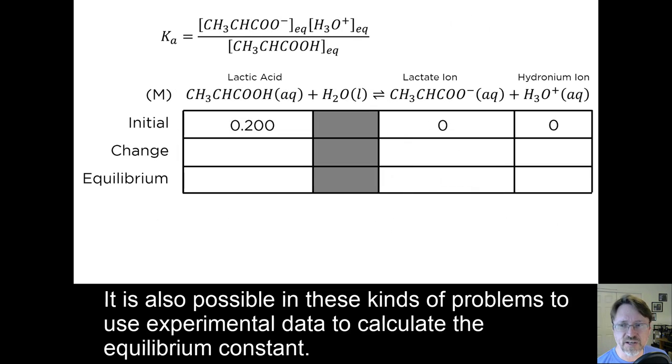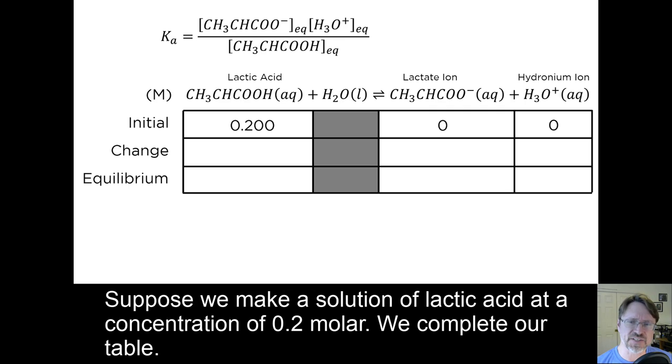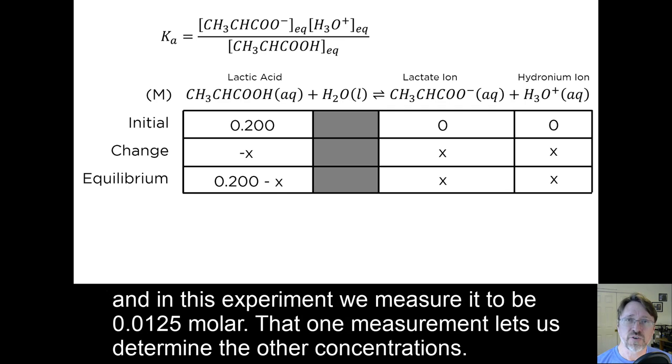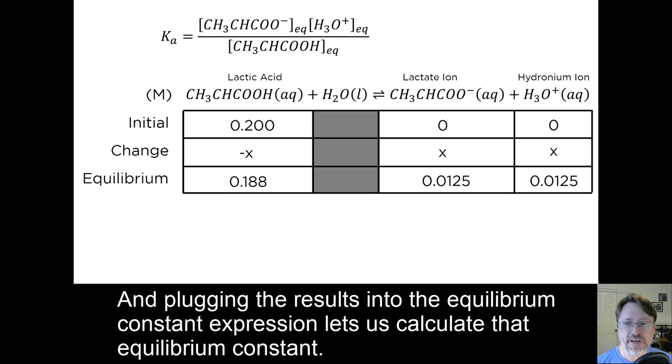It is also possible in these kinds of problems to use experimental data to calculate the equilibrium constant. Suppose we make a solution of lactic acid at a concentration of 0.2 molar. We complete our table. As we will learn in an upcoming lesson, the concentration of the hydronium ion is extremely easy to measure. And in this experiment, we measure it to be 0.0125 molar. That one measurement lets us determine the other concentrations. And plugging the results into the equilibrium constant lets us calculate that equilibrium constant.